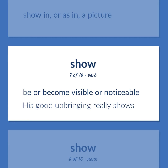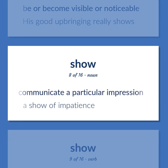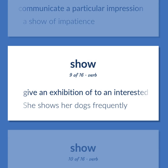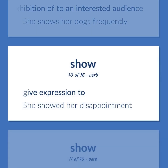Show (verb): Be or become visible or noticeable. Example: His good upbringing really shows. Something intended to communicate a particular impression. Example: A show of impatience. Give an exhibition of to an interested audience. Example: She shows her dogs frequently. Give expression to. Example: She showed her disappointment.